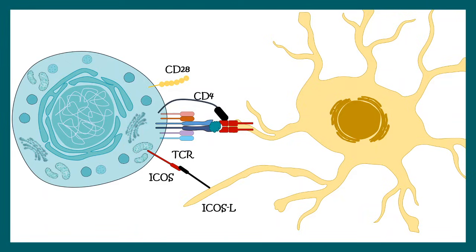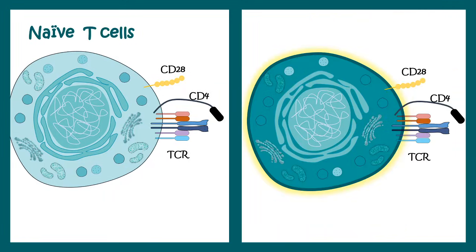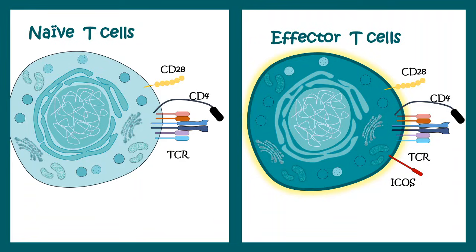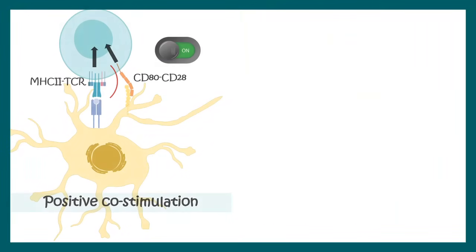This kind of interaction is very important for effector T cells. The naive T cell does not express the ICOS molecule, but effector T cells do. It is also found in memory T cells. It is thought that these ICOS receptors are required for maintaining the activated state.